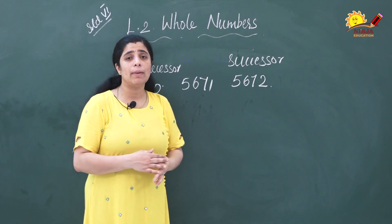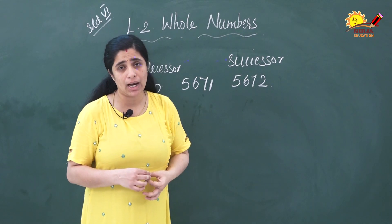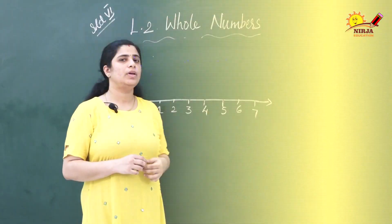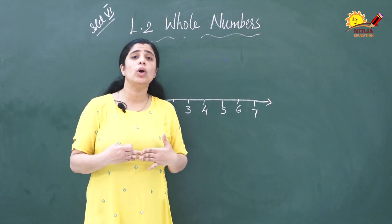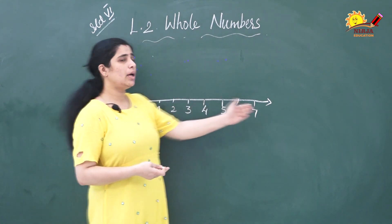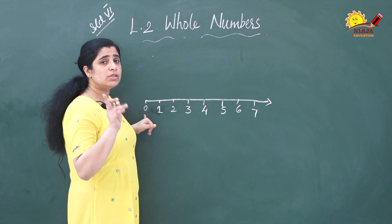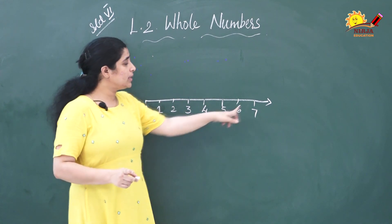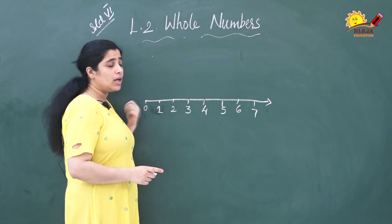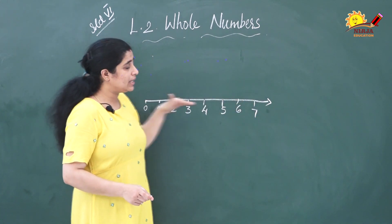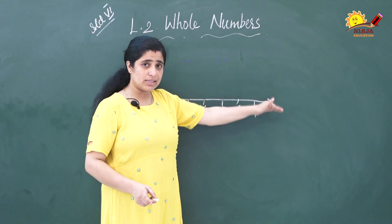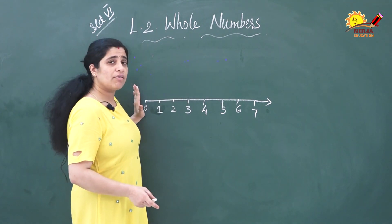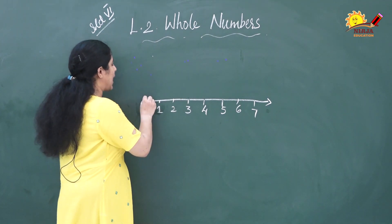Now we will see how to represent whole numbers on a number line, and how to do addition and subtraction using the number line. We start from 0 since whole numbers start from 0. Don't put an arrow mark on the left side at 0, because the arrow mark represents that the line is continuing — and it is not continuing to the left of 0.